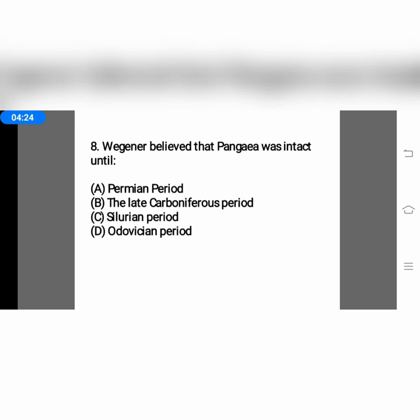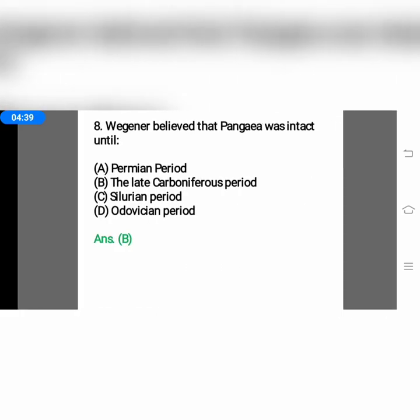The next question: Wegener believed that Pangea was intact until — option A, Permian period; option B, late Carboniferous period; option C, Silurian period; or option D, Ordovician. The answer is option B, the late Carboniferous period.